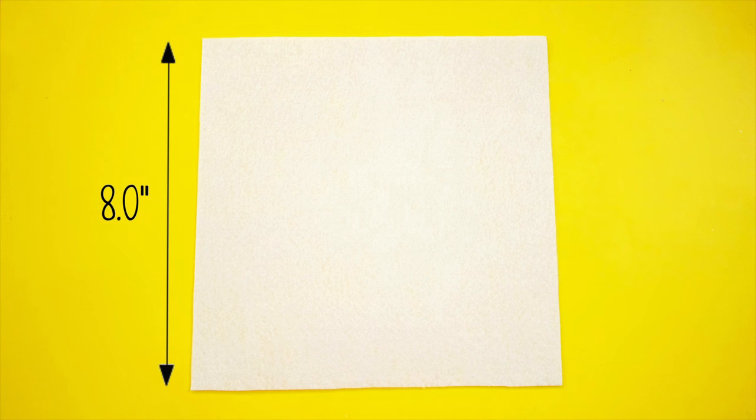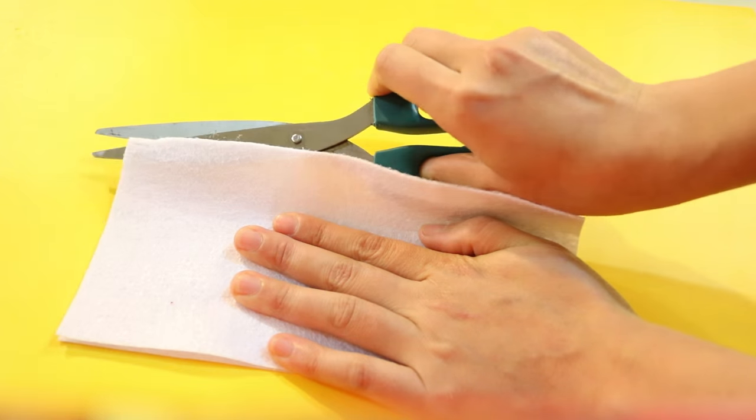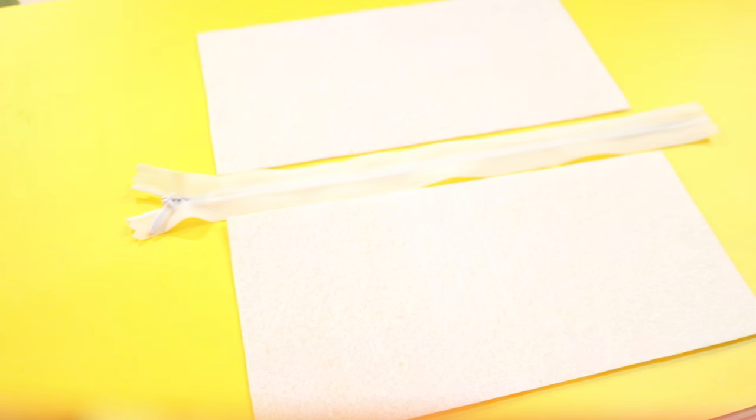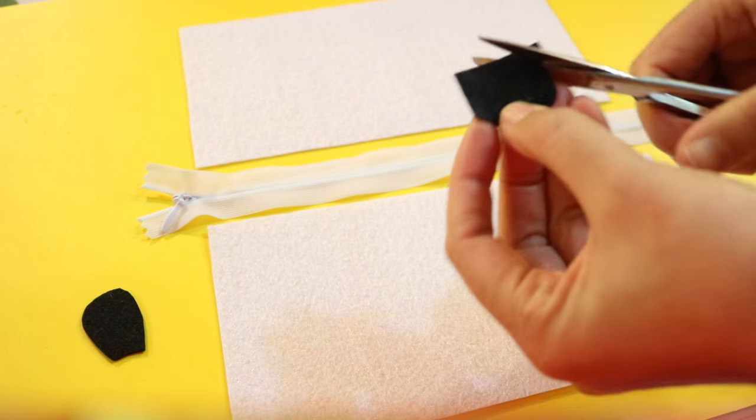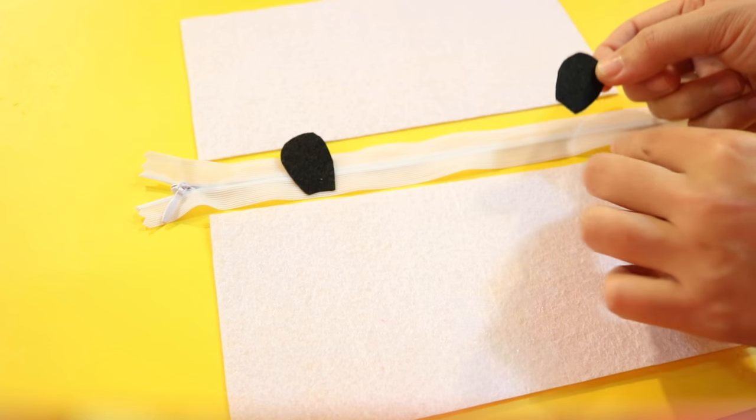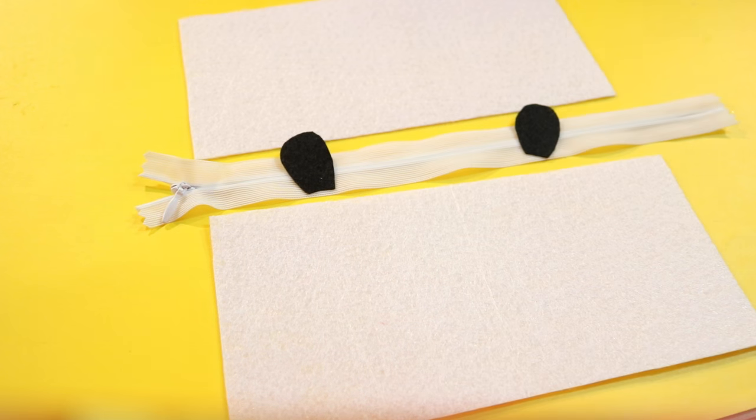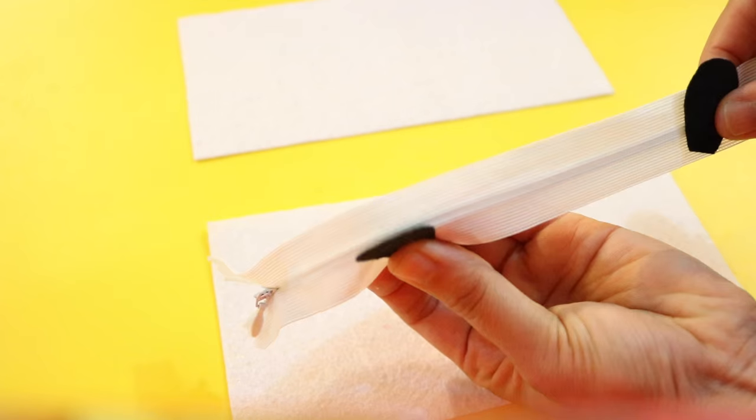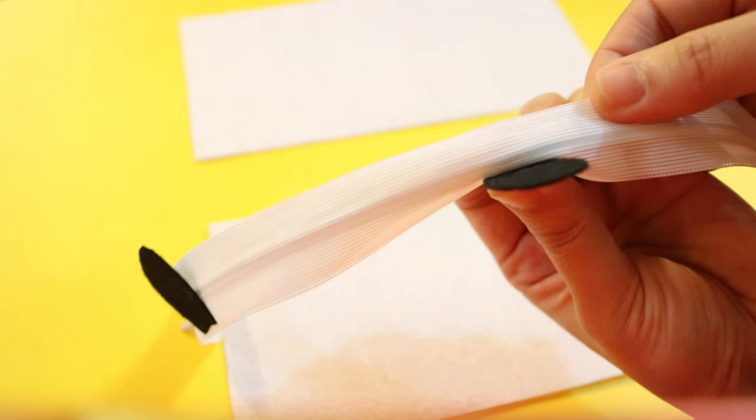Start with a square of white felt, fold it, then cut it in half. Next, take a white zipper and lay it face up. Cut two panda ears out of black felt, apply some glue, then glue it to the side of the zipper like I'm doing here. Make sure you don't get any glue on the actual zipper part, or else you might not be able to open it.